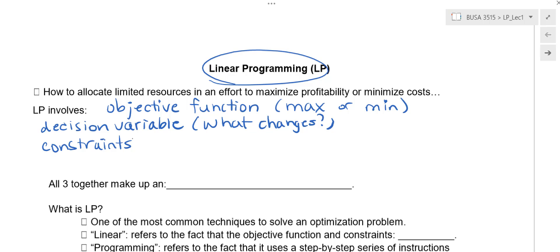So the constraints, these are constraints on the variables and these will be examples that your production has a limit each day. You can only produce so much of each product. Your labor hours, you can only have so many labor hours in a day.